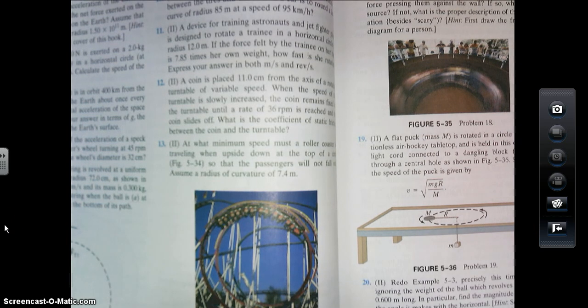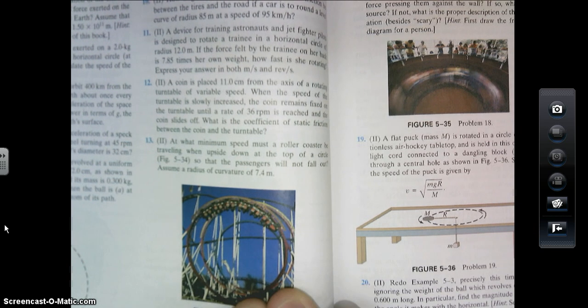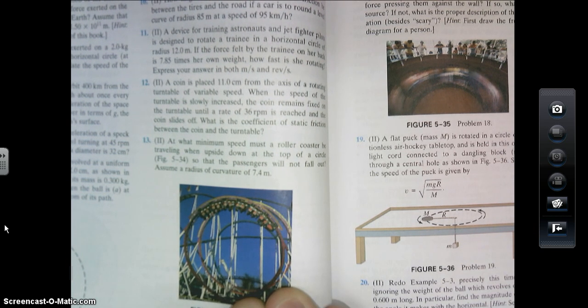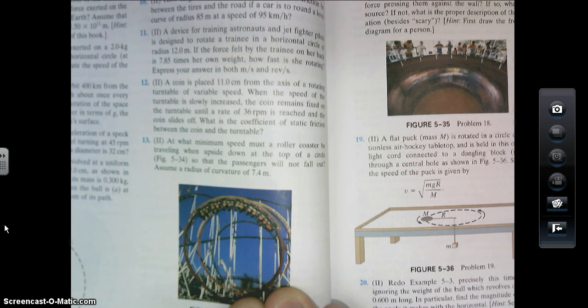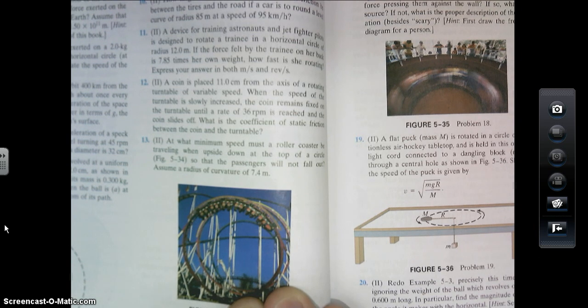All right, so another problem that I want to go through with you is number 13 from chapter 5. It says, at what minimum speed must a roller coaster be traveling when upside down at the top of a circle so that the passengers will not fall out? Assume a radius of curvature of 7.4 meters.